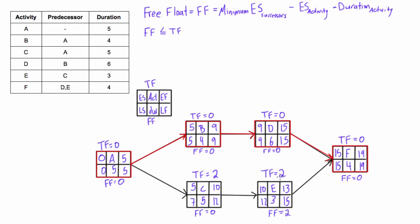Why does activity E have a free float of two while activity C has a free float of zero, even though both have a total float of two? Total float is the amount of time you can delay an activity without increasing the project length. If we delay activity E by two days, it starts on day 12, finishes on day 15, and that 15 doesn't push back the early start of activity F, which already had to start on 15 because of activity D. The project still ends on day 19. The same logic applies to activity C — delaying it by two days leads to the same end date.